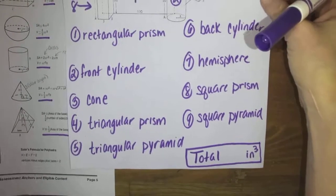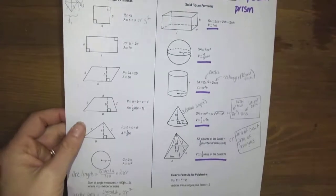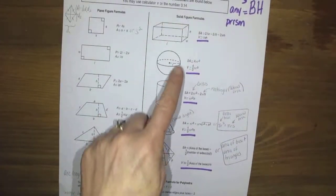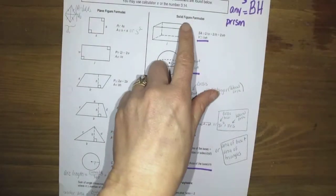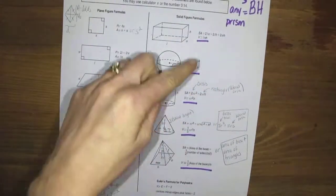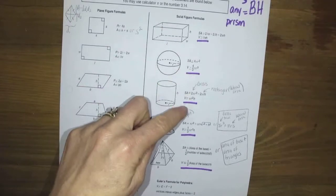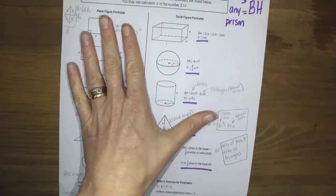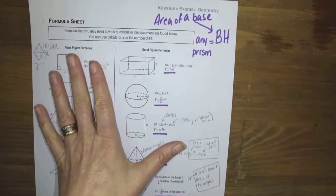So let's look at the formula sheet for a minute. You were given a formula sheet and you're going to focus on the second column here where it has solid figure formulas. We're doing volume, so I underlined the five formulas that you will need. However, there is another formula that is not listed here that is a very good one to know.